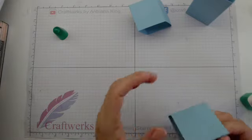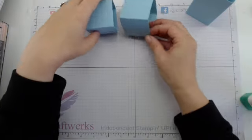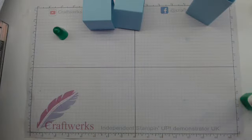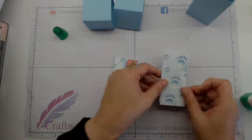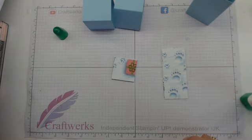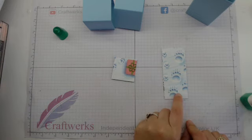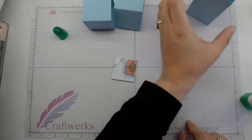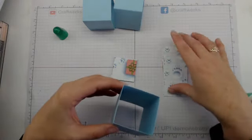These are our little cubes. For our designer series paper we need eight pieces that measure one and a quarter by one and a quarter, and four pieces that measure one and three quarters. These are one and three quarters square and these are one and three quarters by three and three quarters.